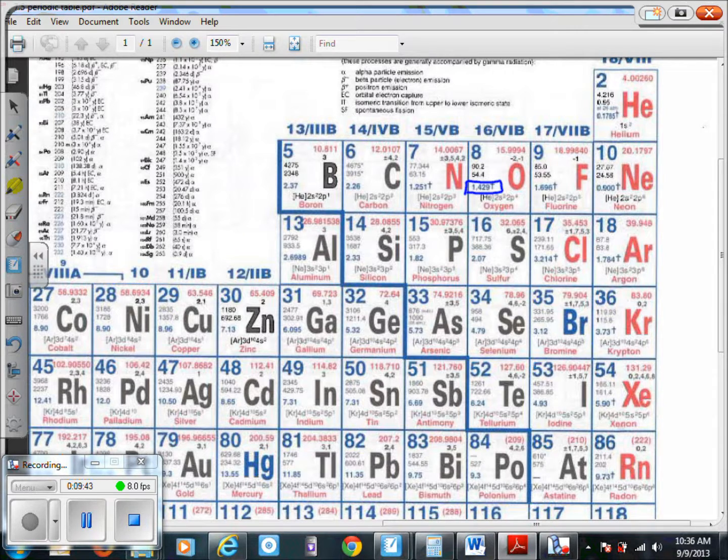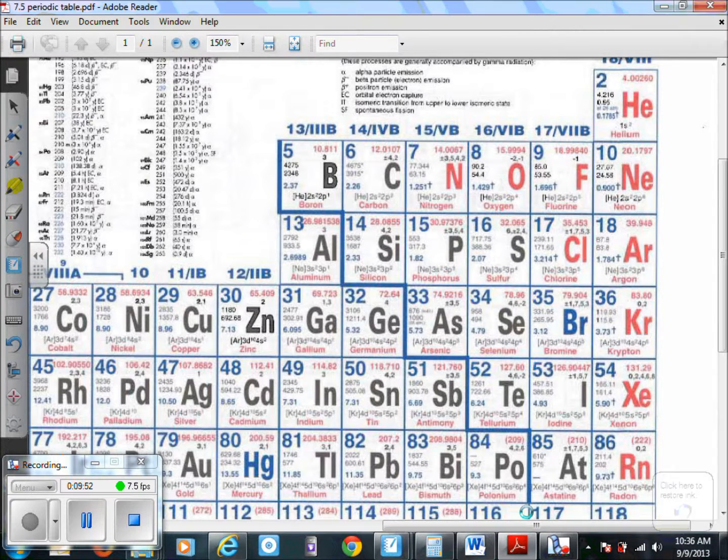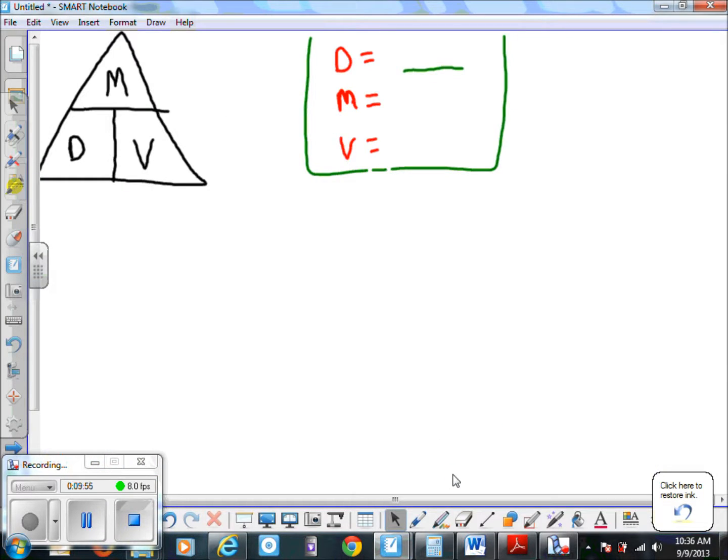There it is - got oxygen right here. The density for oxygen is 1.429 grams per cubic centimeter. We're going to have to go back over to our work and put that in: 1.429 grams per cubic centimeter. That's the one unknown that you didn't have.